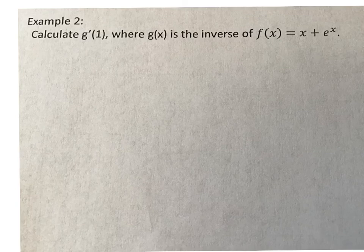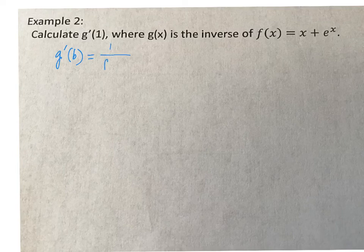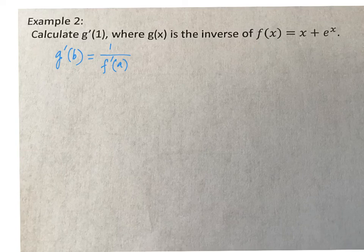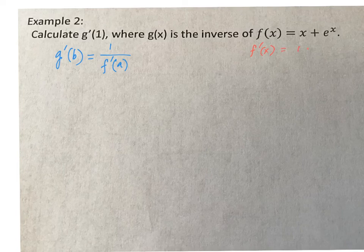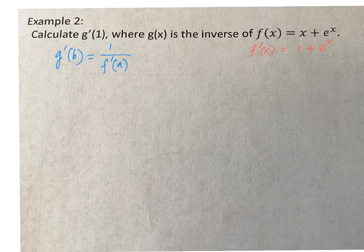In example number 2, we are going to use the definition of the derivative of an inverse function that we derived earlier: g prime of b equals 1 over f prime of a. Using this definition, we do not have to solve for g or f inverse — we can go directly to f and find its derivative. So f prime of x equals 1 plus e to the x. Using the definition, g prime of y equals 1 over f prime of x.